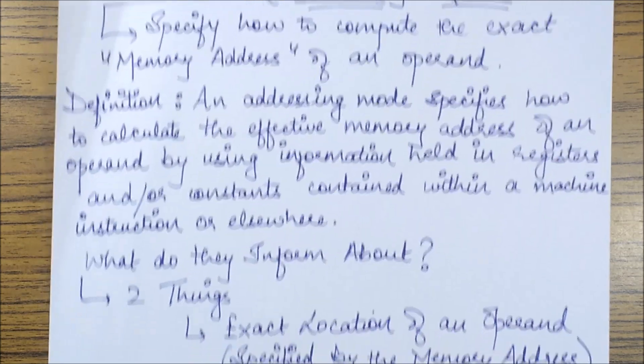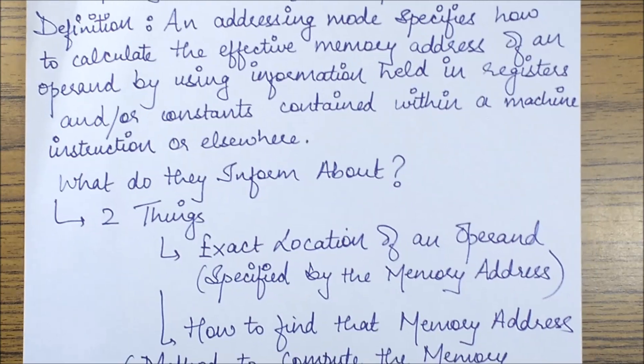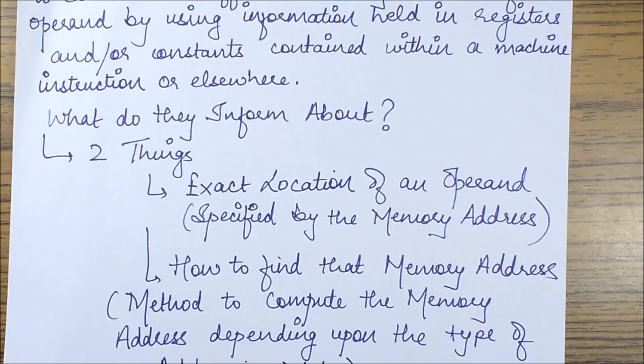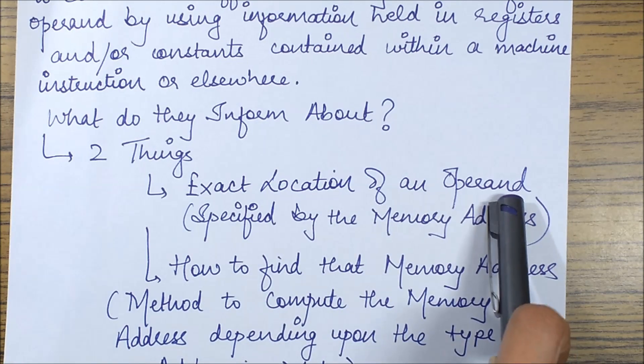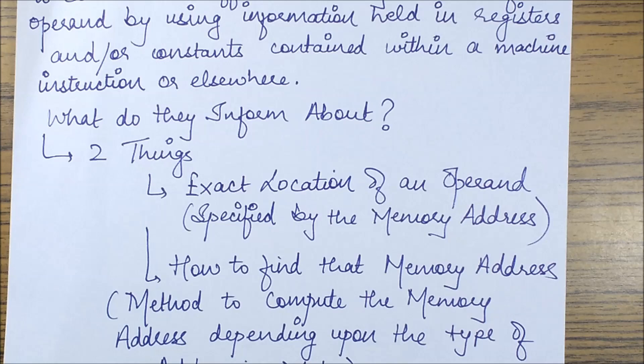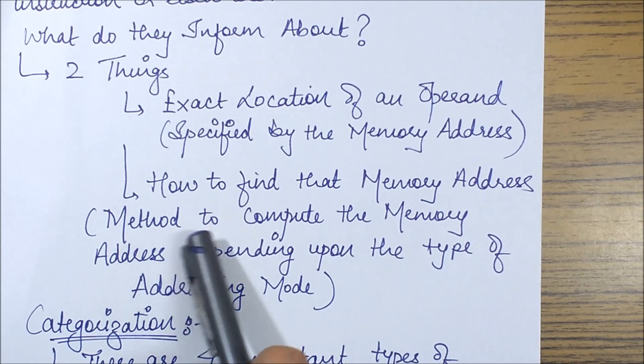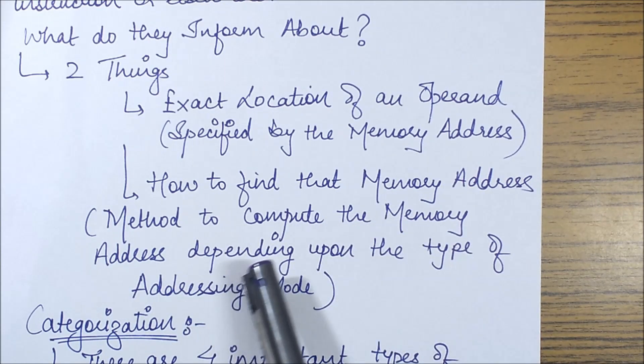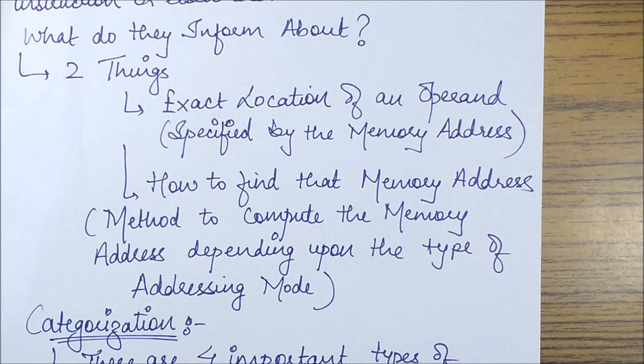So there are two basic things which an addressing mode states. What are those? An addressing mode specifies the exact location of an operand which is specified by the memory address stated in the instruction, and how to find that memory address, which is in turn informed by the method to compute the memory address depicted from the type of addressing mode, which is in turn seen by the type of writing style of an instruction.